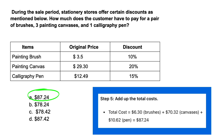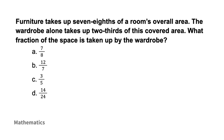Next problem: furniture takes up seven-eighths of a room's overall area. The wardrobe alone takes up two-thirds of this covered area. What fraction of the space is taken up by the wardrobe? Take a moment, work the problem out, and come back when you're ready.